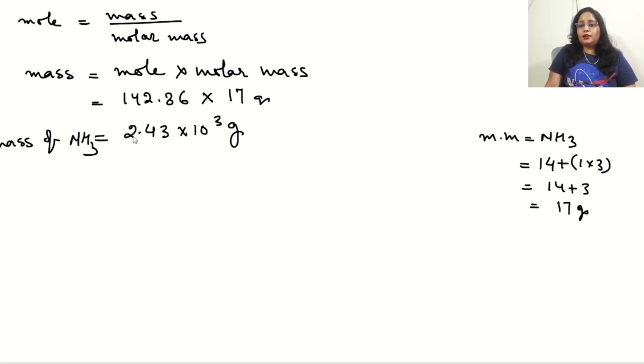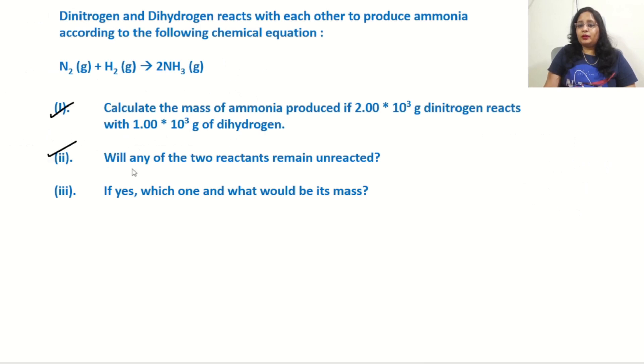For the second part, will any reactants remain unreacted? We saw that 500 moles of hydrogen were available but only 214 moles were used. So yes, hydrogen is unreacted. For part three, which one and what would be its mass? The answer is hydrogen.